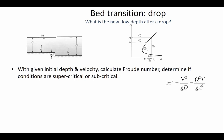We have a specific energy diagram and we start off with our initial depth y1 — that's the depth of flow before the step. We can see that y1 is greater than the critical depth, so conditions are subcritical — anytime your flow depth is larger than the critical depth, you've got subcritical conditions. Knowing that helps us know where to go on that graph.